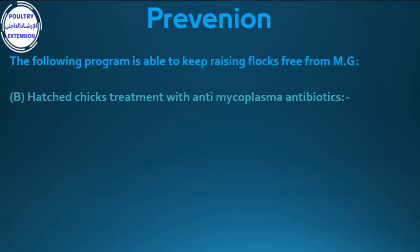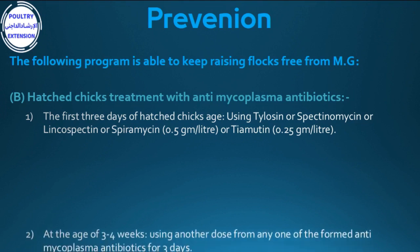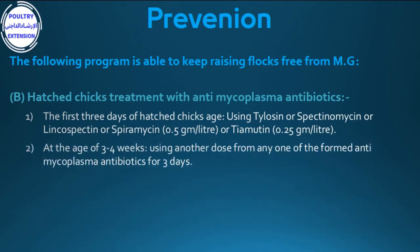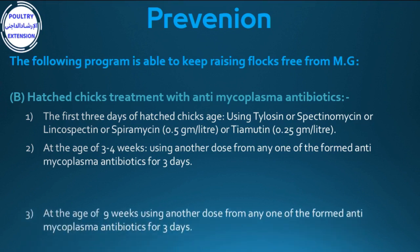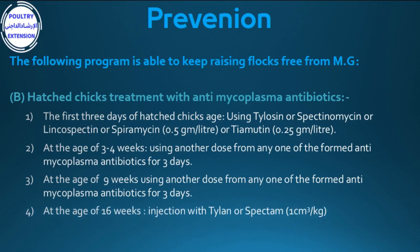B) Hatched chick treatment with anti-mycoplasma antibiotics during the first three days of chick age, using tylosin, spectinomycin, or spiramycin at 0.5 g per liter water, or tiamulin at 0.25 g per liter water. At 3 to 4 weeks of age, give another dose of any anti-mycoplasma antibiotic for three days. At 9 weeks, another dose for three days. At 16 weeks, injection with tylosin or spectinomycin at 1 cc per kilogram live weight.